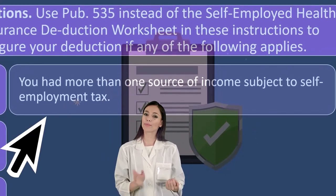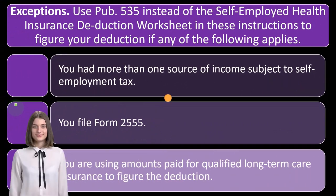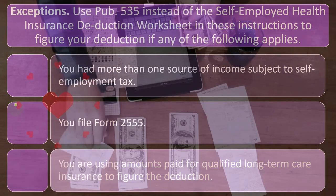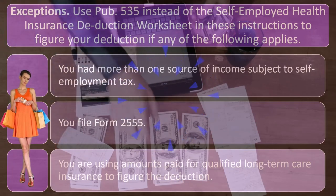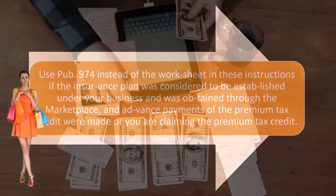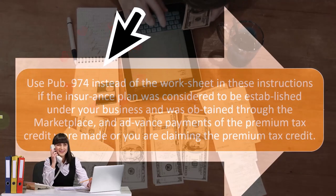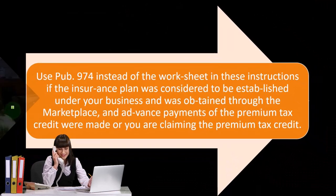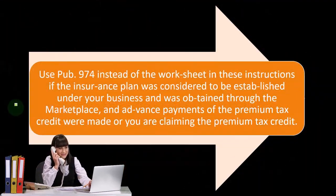Use IRS Publication 535 instead of the self-employed health insurance deduction worksheet if any of the following apply: you had more than one source of income subject to self-employment tax, you file Form 2555, or you are using amounts paid for qualified long-term care insurance to figure the deduction. Use Publication 974 instead of the worksheet if the insurance plan was established under your business through the Marketplace, advance payments of the premium tax credit were made, or you are claiming the premium tax credit.